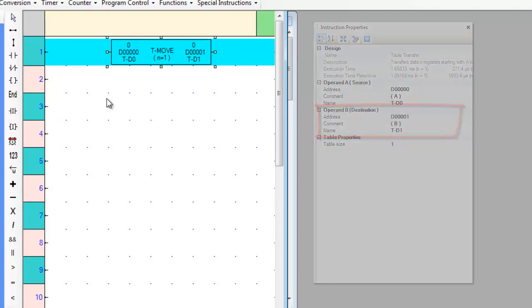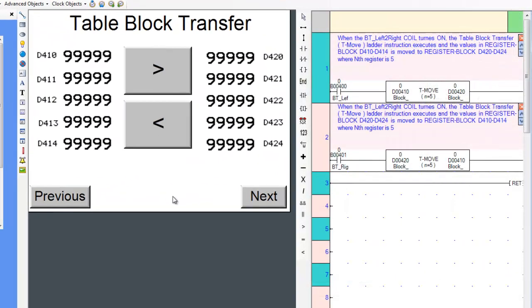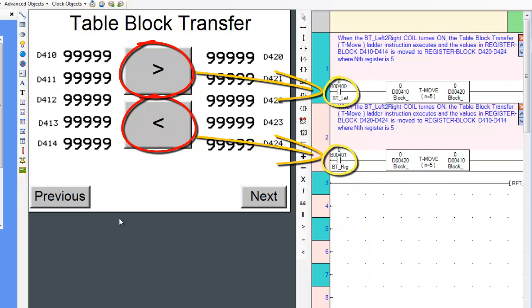Now, let's go to screen C2 and have an appropriate ladder logic block placed beside it. Like before, when a person presses the right arrow button or the left arrow button, it turns on a particular coil and executes the ladder logic instruction.